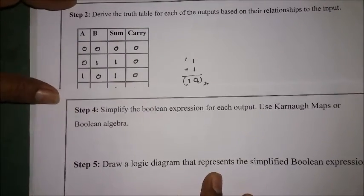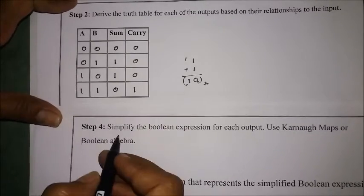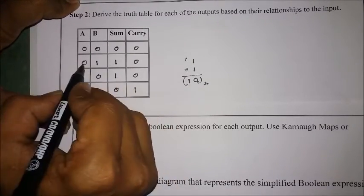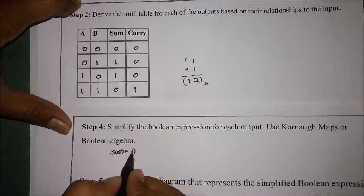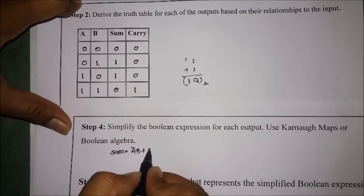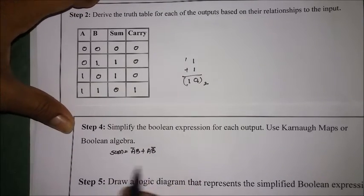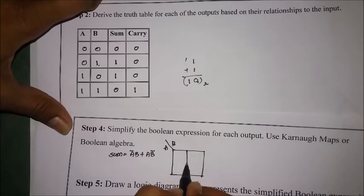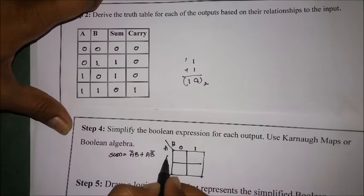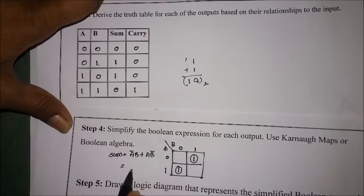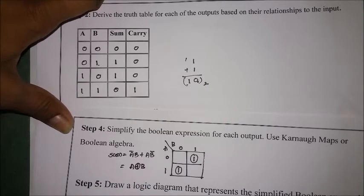The simplification of the Boolean expression for each output using K-map: for the sum equation, the output is 1 for input combinations 0,1 and 1,0. So sum can be written as A'B + AB'. Plotting this on a two-variable K-map with A and B, we get ones at those two positions with no possibility of simplification — this is nothing but the XOR gate: sum = A ⊕ B.